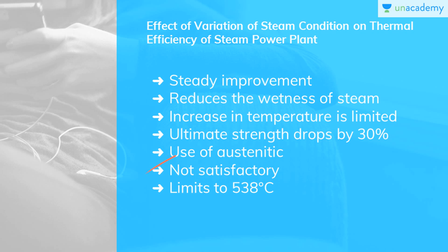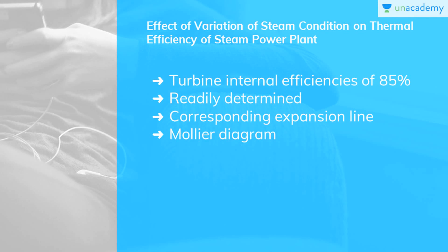Steam temperatures up to 600 degrees centigrade can be used in some power plants. However, operating experience with expensive high-temperature austenitic steel is not always satisfactory. The maximum steam temperatures are generally limited to 538 degrees centigrade and in few cases to 565 degrees centigrade. The maximum steam pressures or throttle pressures can be used at 3 different condenser pressures and 2 inlet steam temperatures.